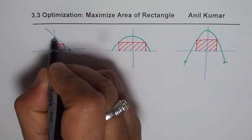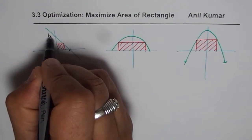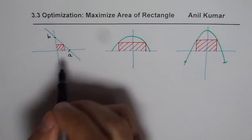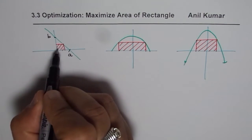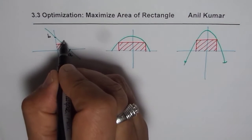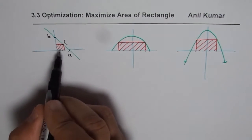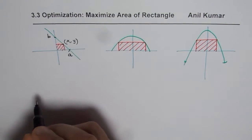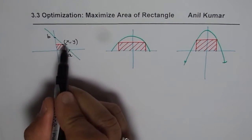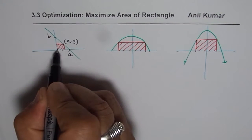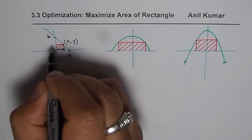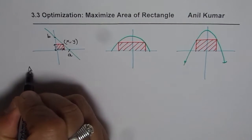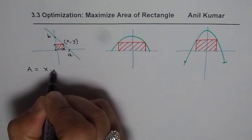So let me take a general straight line which has y-intercept at b and x-intercept at a. In that case, how do we find the maximum area of a rectangle? In general, we can say: let the vertex which lies on the line be at point (x, y). Here, x is the horizontal distance and y is the vertical distance. So the area of the rectangle is equal to x times y.